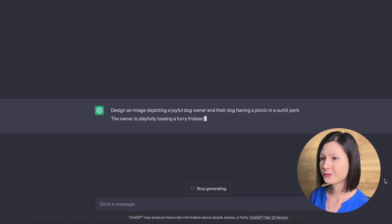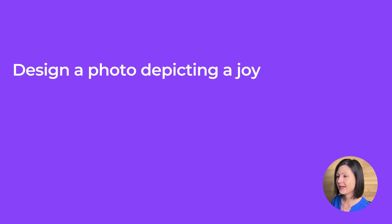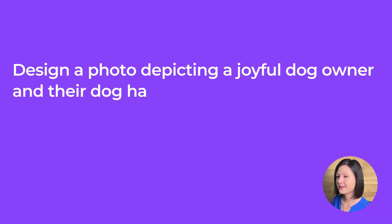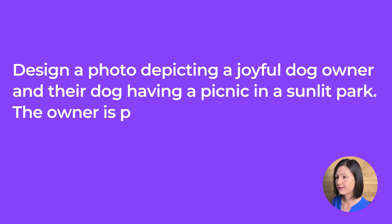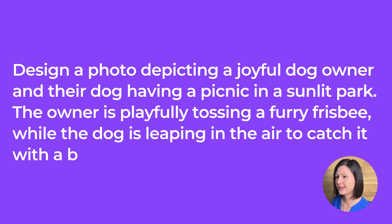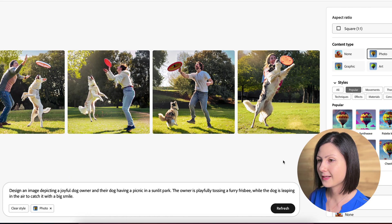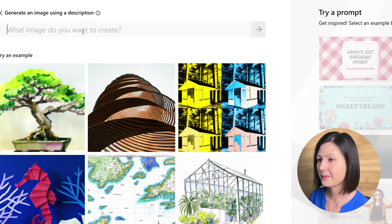Moving on to the second round, our prompt is as follows: Design a photo depicting a joyful dog owner and their dog having a picnic in a sunlit park. The owner is playfully tossing a furry frisbee while the dog is leaping into the air to catch it with a big smile. Let's paste our second prompt into our text-to-image generators and hope for the best.